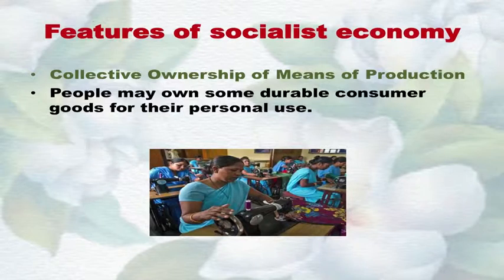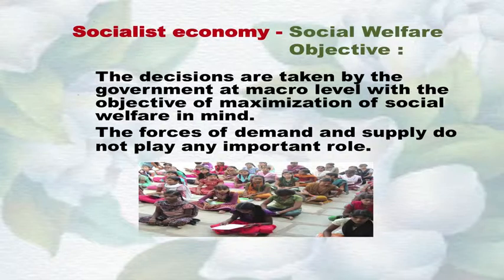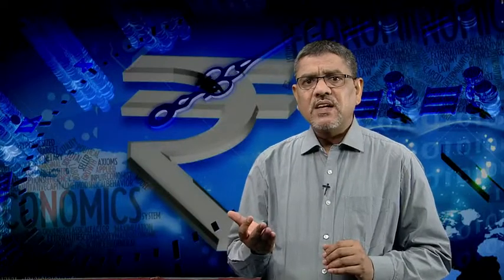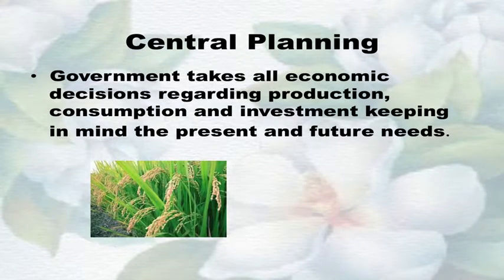However, people may own some durable consumer goods for personal use. Number two: Social welfare objective — decisions are taken by the government at the macro level with the objective of maximizing social welfare rather than individual profit. The forces of demand and supply do not play an important role; decisions are taken with welfare objectives in mind. Number three: Central planning — economic planning is an essential feature of a socialist economy. The central planning authority allocates resources keeping national priorities and availability in mind. Government takes all economic decisions regarding production, consumption and investment, considering present and future needs.